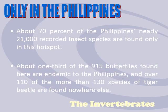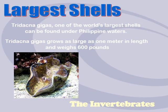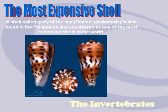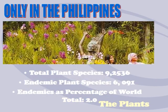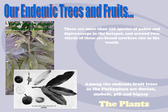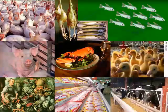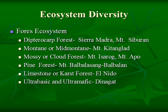What else is found only in the Philippines? The giant clam, Tridacna gigas, found in Bolinao and Camiguin. Then there is the smallest shell, the Pisidium, less than 1 mm long, and the most expensive shell, Conus gloriamaris. For plants, Mabolo, Pili, and Bignay are endemic, as well as the flower Vanda sanderiana.